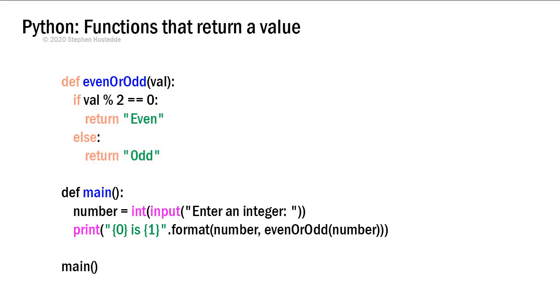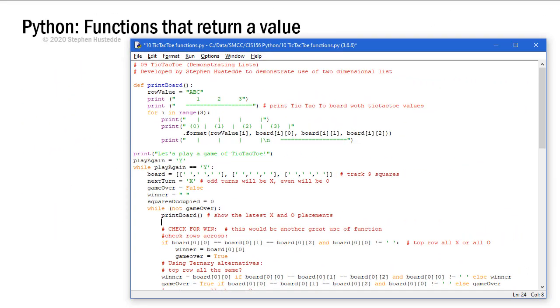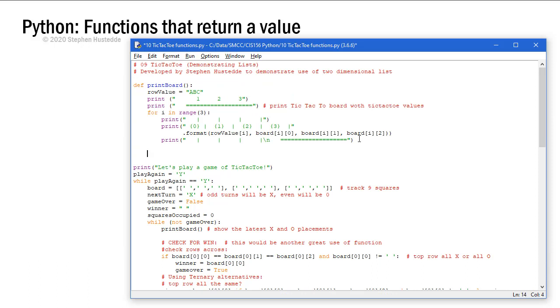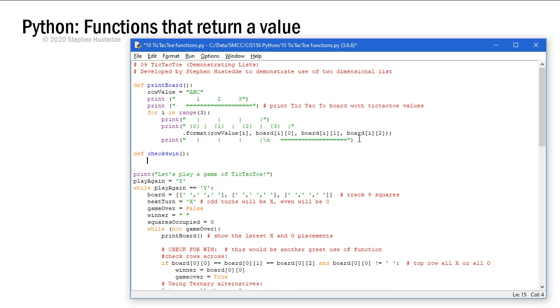Let's go back to our tic-tac-toe game. Previously, we created a void function to print the board after X or O takes their turn. What I want to do now is to change the check for win into a function that returns a value. So I'm going to add another function declaration, def, and we'll call it check for win.